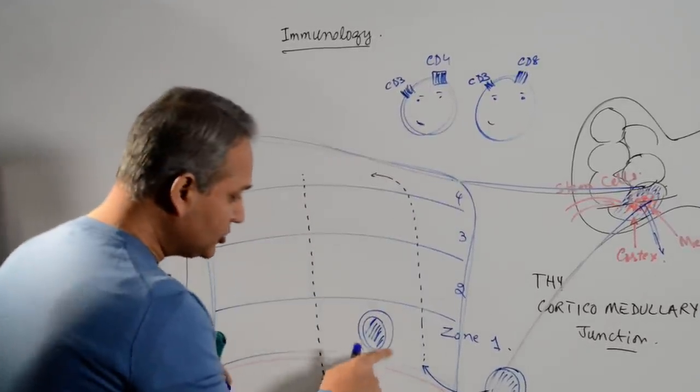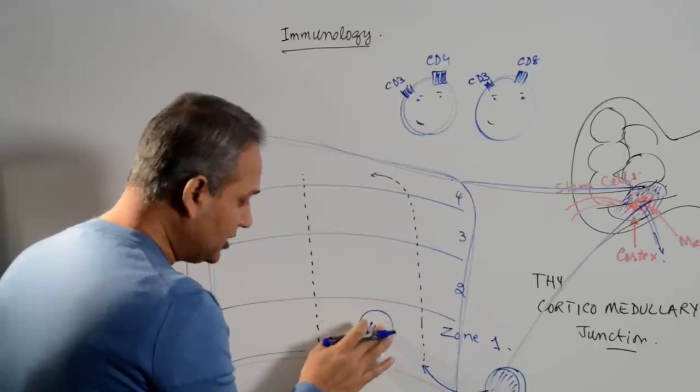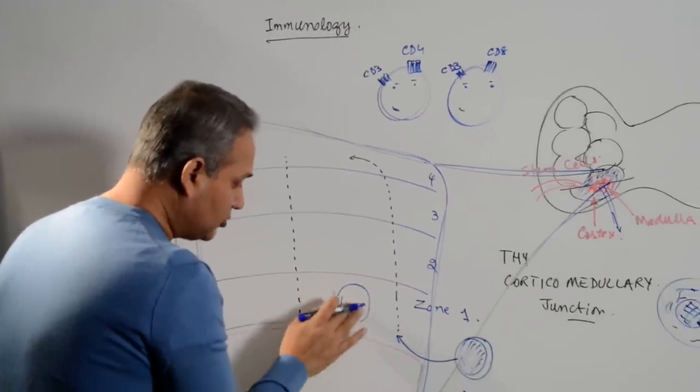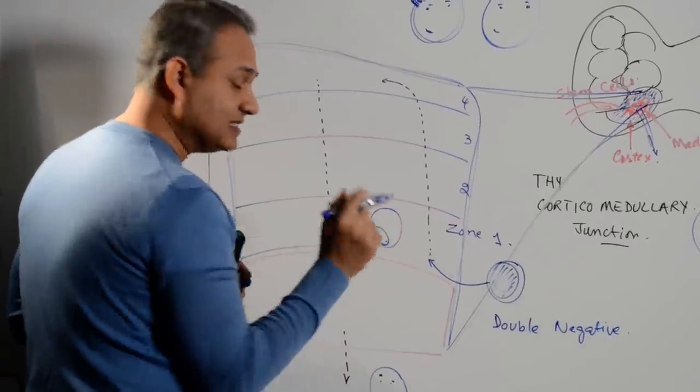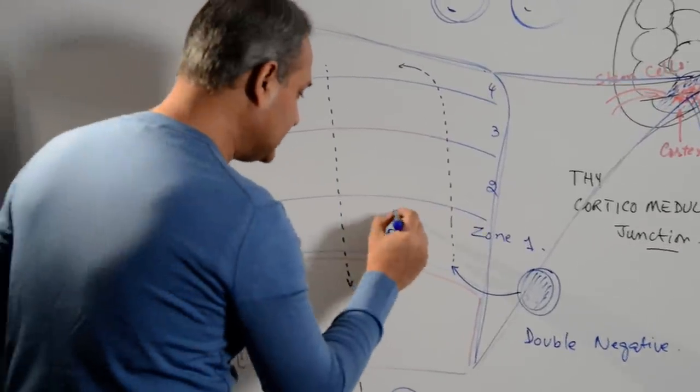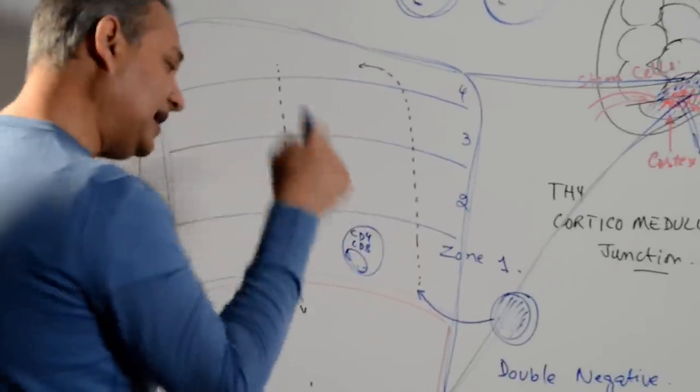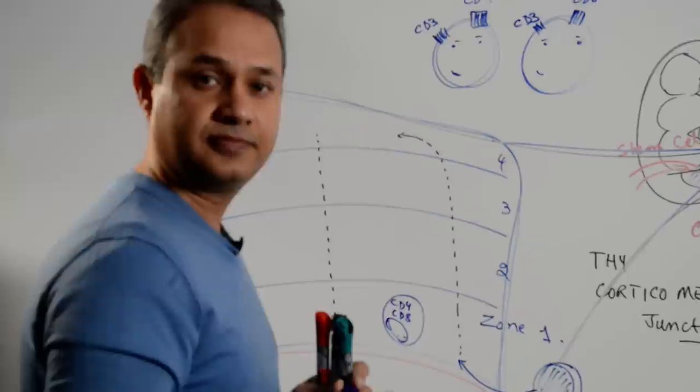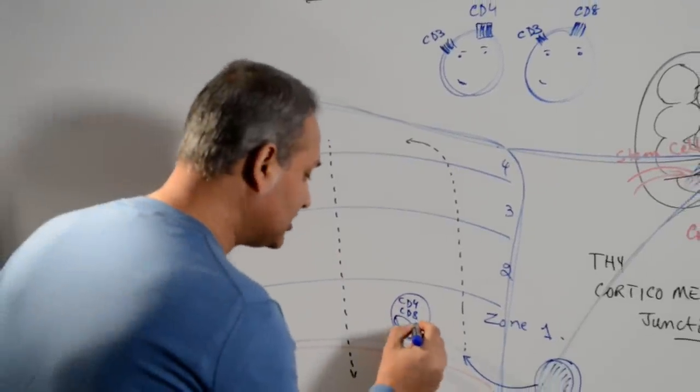In the beginning when a thymocyte comes here, now for my purpose of teaching, I'm going to remove the nucleus and make it a little bit smaller, just so that I can teach. This now cell is double positive. That means it has CD4 and CD8 both inside the cytoplasm. These are not present on the surface yet, but these are inside the cytoplasm. It also has CD3.